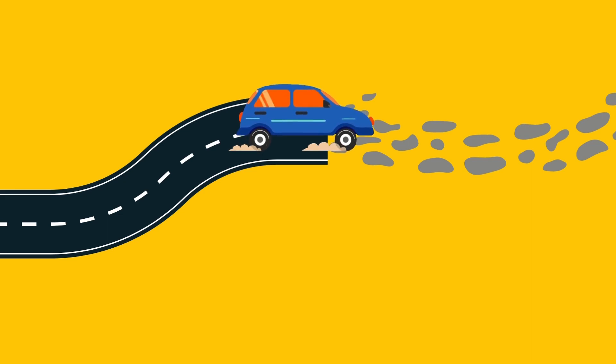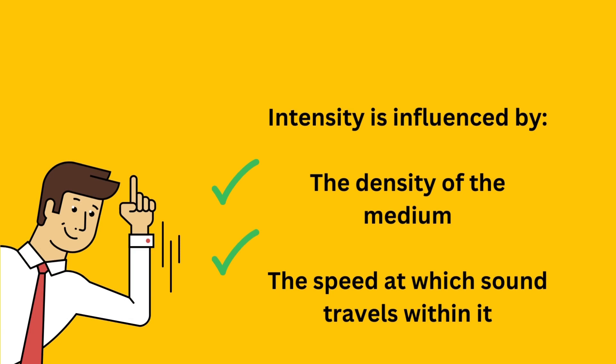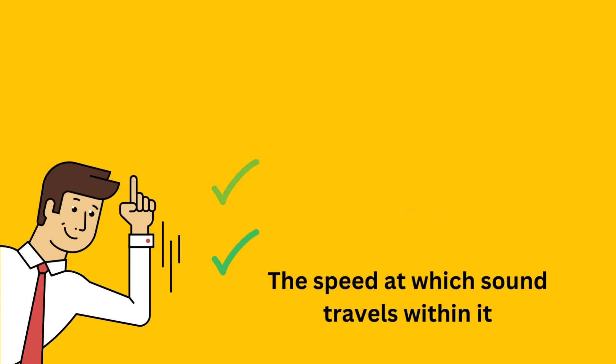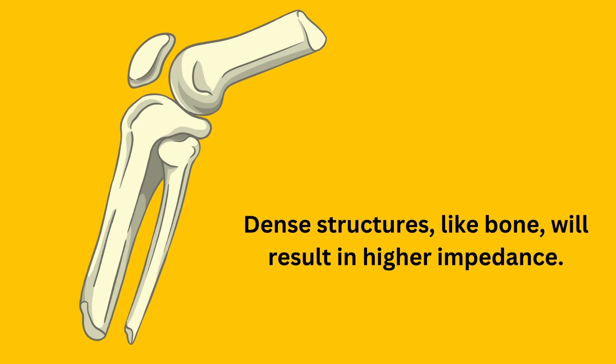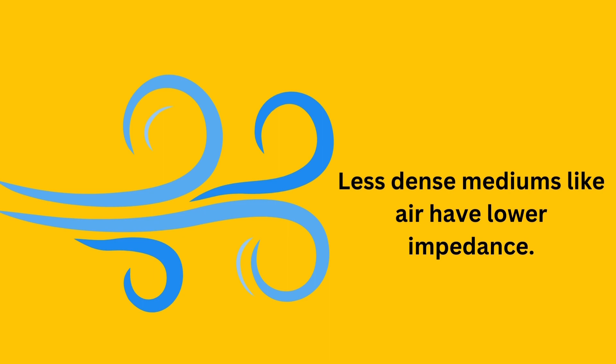Impedance is influenced by two key factors: the density of the medium and the speed at which sound travels within it. Density plays a significant role in impedance because it determines how closely packed the particles or molecules are within the medium. A denser medium, such as bone, has more particles per unit volume, resulting in a higher impedance. A less dense medium, such as air, has fewer particles per unit volume, leading to lower impedance.